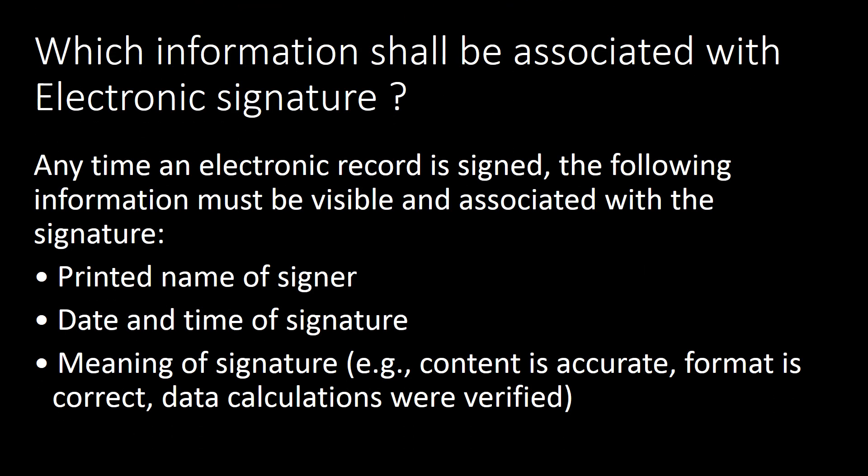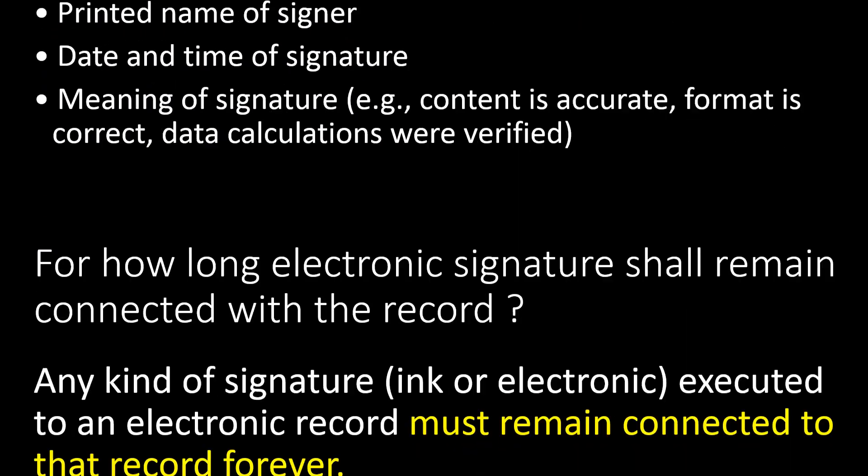Which information shall be associated with an electronic signature? Any time an electronic record is signed, the following information must be visible and associated with the signature: 1. Printed name of signer. 2. Date and time of signature. 3. Meaning of signature — for example, content is accurate, format is correct, data calculations were verified.